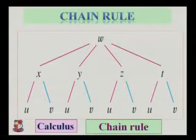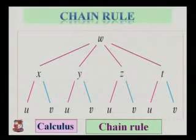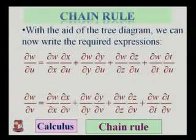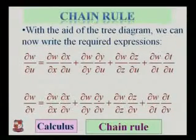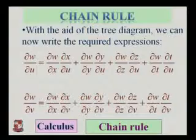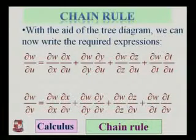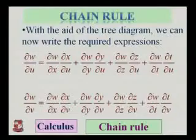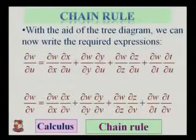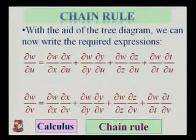Suppose w is a function of x, y, z and t; x is a function of u and v; y is a function of u and v; z is a function of u and v; and t is also a function of u and v. With the aid of the tree diagram, we can write the required expansion: del w by del u equals del w by del x into del x by del u, plus del w by del y into del y by del u, plus del w by del z into del z by del u, plus del w by del t into del t by del u.